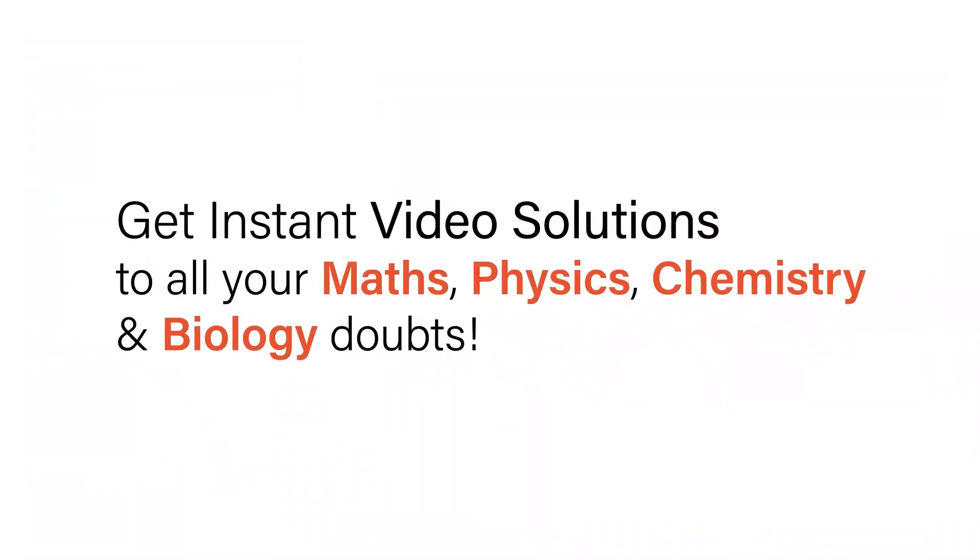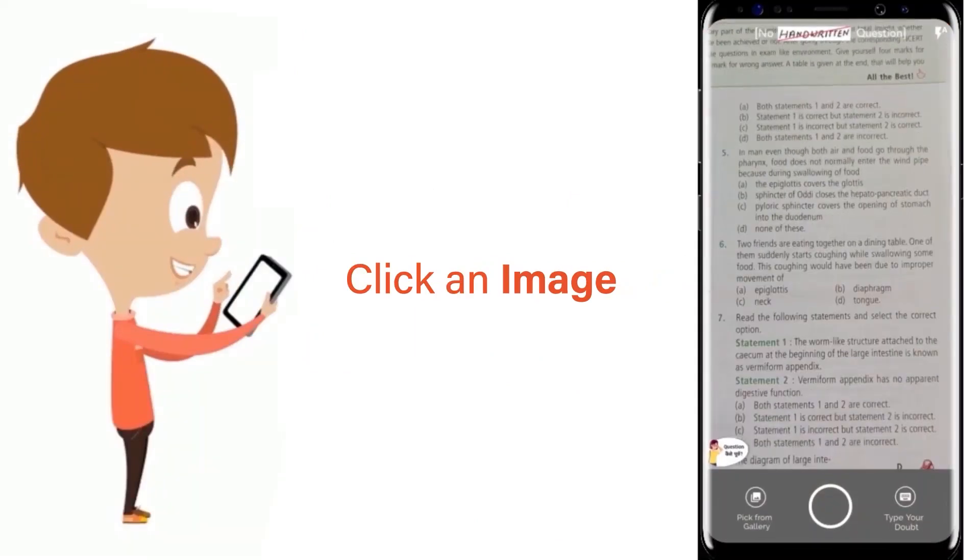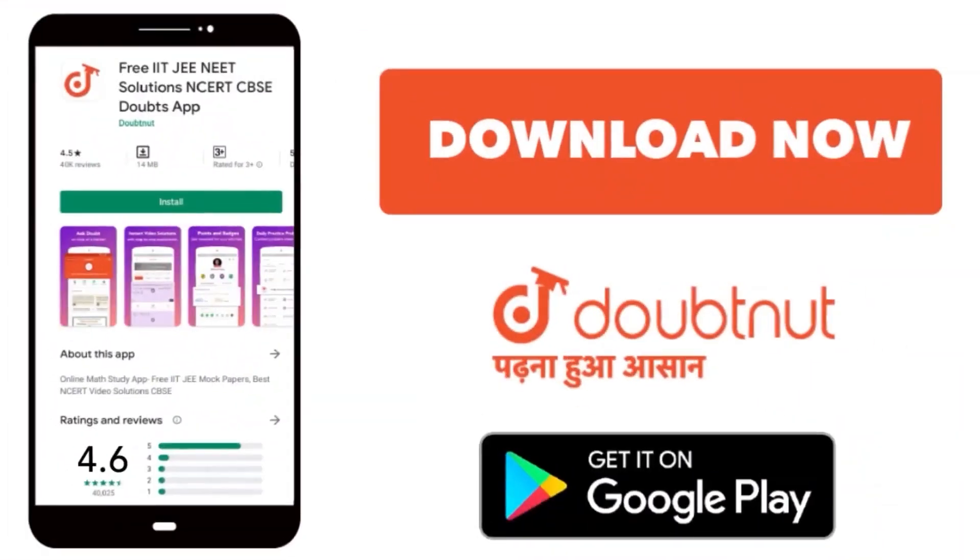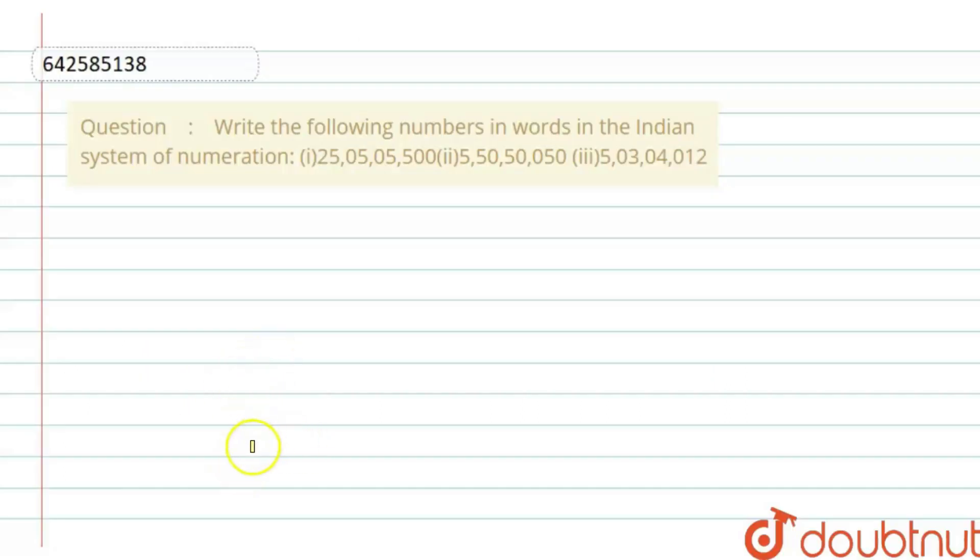With Doubtnut, get instant video solutions to all your math, physics, chemistry, and biology doubts. Just click the image of the question, crop it, and get instant video solutions. Download Doubtnut app today. Hello everyone, the question is: Write the following numbers in words in the Indian system of numeration. We are given three parts.